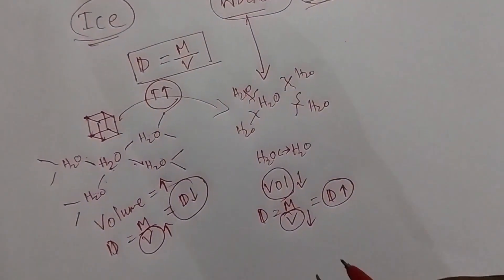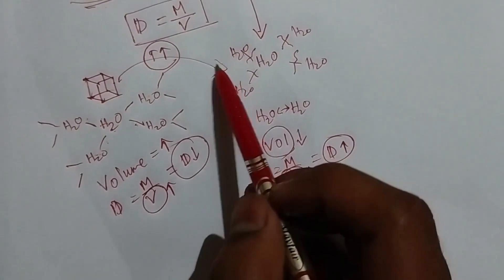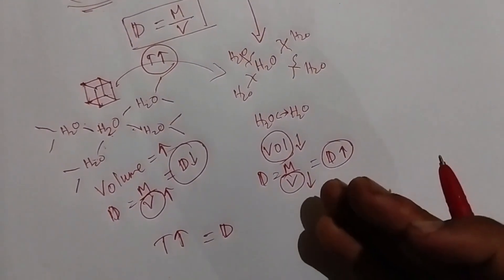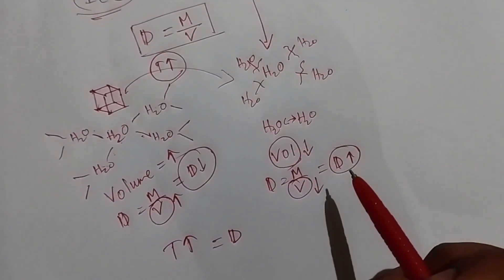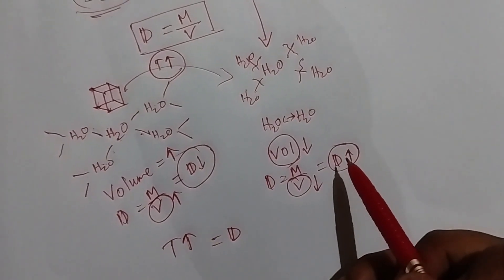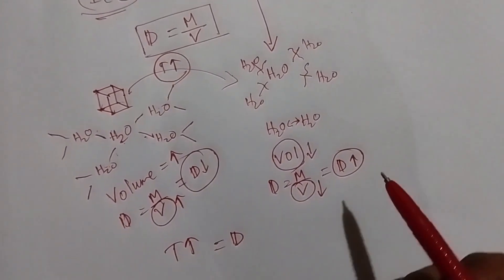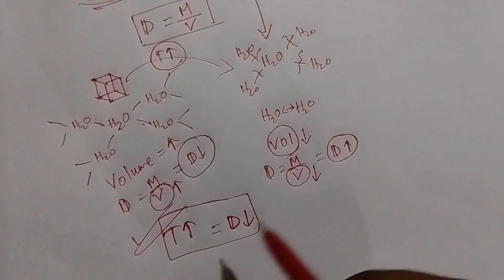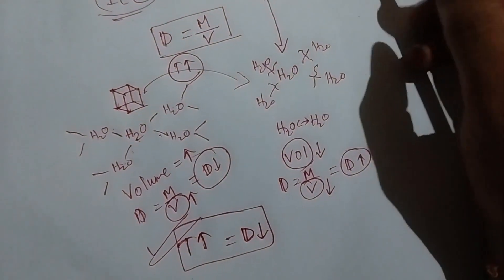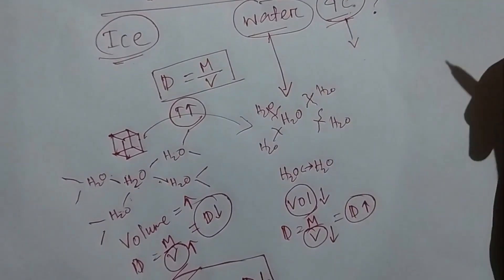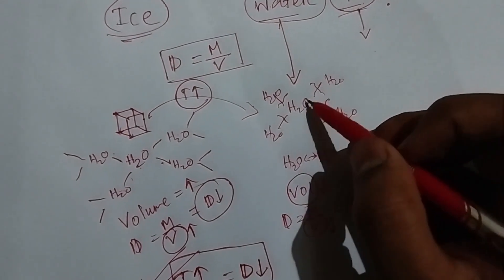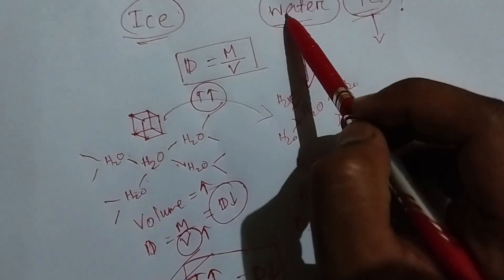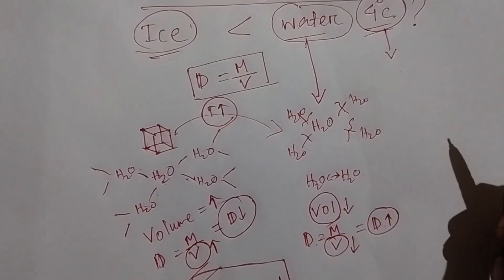As the volume is declining, the density increases. So from zero to four degrees Celsius, as the hydrogen bonds break down, particles are nearer to each other, volume is declining, and density is increasing. The density is maximum at four degrees Celsius. In the case of water compared to ice, the density is more because the open spaces are reduced.